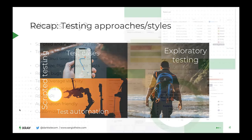So, what is X-Ray? X-Ray is a Jira app or plugin. It supports cloud and on-premises Jira instances. On Jira server and data center it's deployed onto the servers; in cloud, it's deployed in X-Ray's own infrastructure and communicates with the Jira cloud infrastructure — but in essence it's a Jira plugin. It covers scripted and exploratory testing, and you can use it to organize, plan, and execute tests, report bugs, track those bugs, and maintain complete traceability between bugs and requirements.